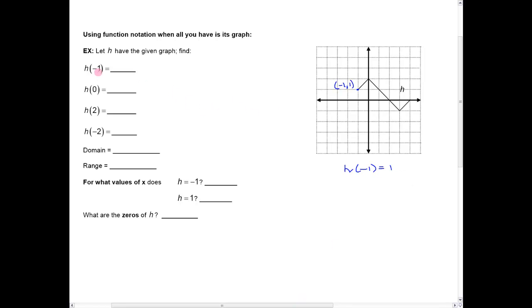So when it comes over here and I say, hey, what's h of negative 1? That's saying tell me the output, tell me the y value for this particular function right here when the input's negative 1. So if the x value is negative 1, you can see from the graph that the output, the y value is 1. So h of negative 1 is 1.